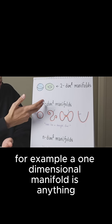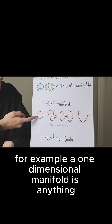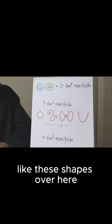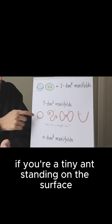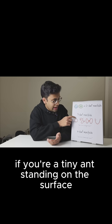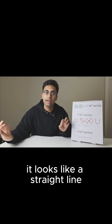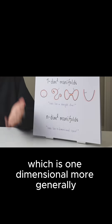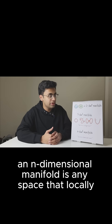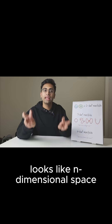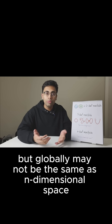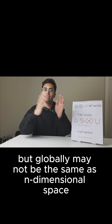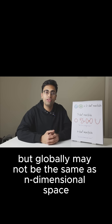For example, a one-dimensional manifold is anything like these shapes over here. If you're a tiny ant standing on the surface, you're going to think that it looks like a straight line, which is one-dimensional. More generally, an n-dimensional manifold is any space that locally looks like n-dimensional space, but globally may not be the same as n-dimensional space.